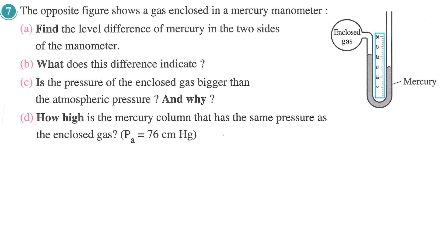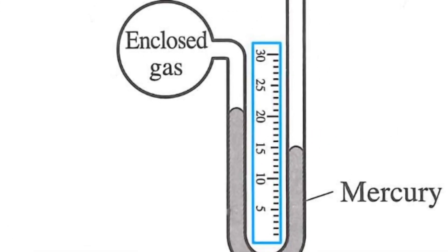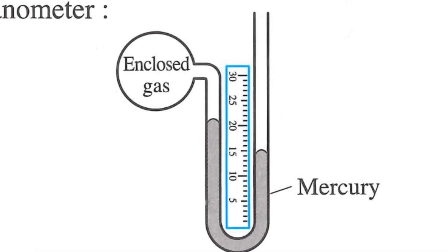Let's do a zoom here and look at the other level. Reading the ruler: this level is 15 and this level is 21, almost. The difference: 21 minus 15 equals 6 cm. This is of course mercury, so this 6 cm is the difference between the heights.